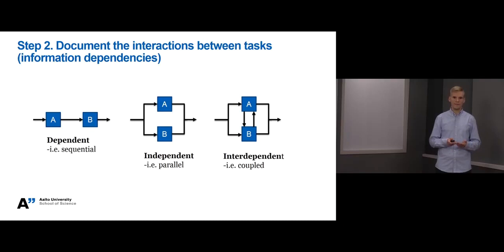Next, we need to document the different interactions between the tasks. Here, you find examples of the basic interactions that any two tasks can have. In the first example, on the left, task B is dependent on the information produced by task A before it can be completed. This means that tasks A and B are sequenced.